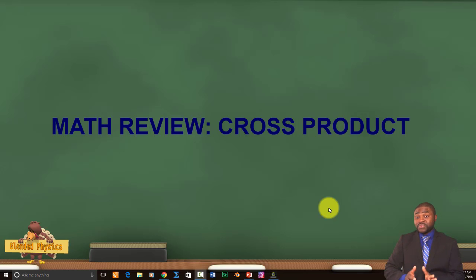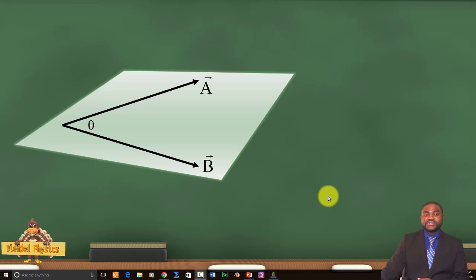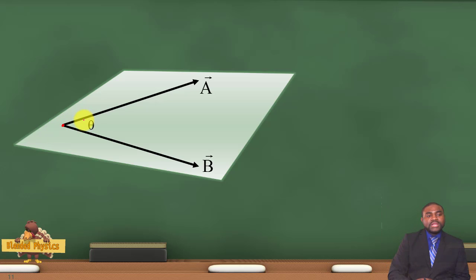Now when you are multiplying two vectors, you follow a different set of procedures which we are going to discuss in this short lesson. Let's say we have two vectors A and B with a common point of application. Let the angle between vector A and vector B be theta.